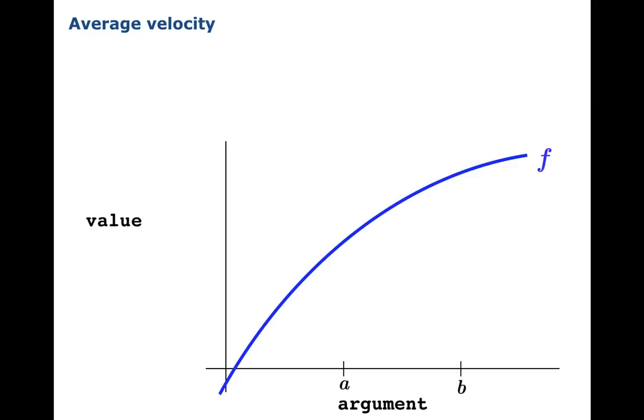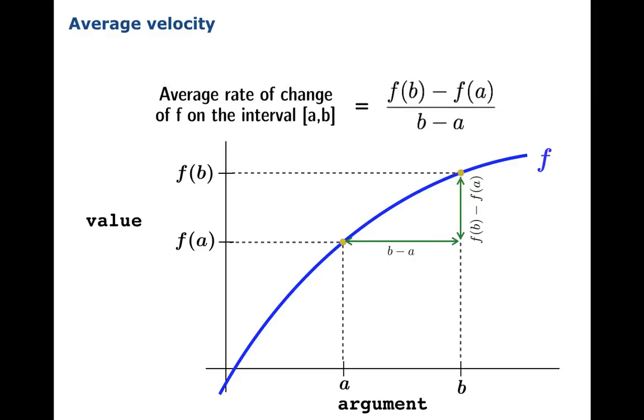You could pick an interval from argument a to argument b, calculate the function values, measure the change in function value and the change in argument. When you take the quotient of these quantities, you have calculated the average rate of change of f on the interval from a to b. By the way, you've also calculated the slope of the line joining those two points on the graph.